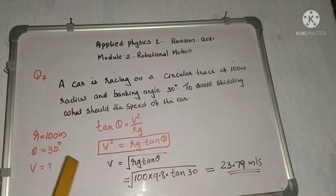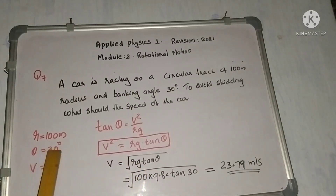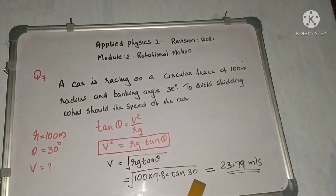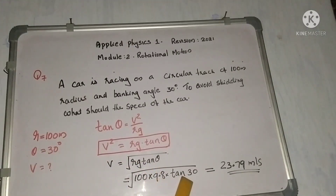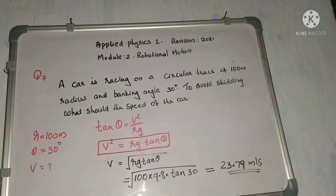Given r = 600 m, g = 9.8 m/s², and θ = 30 degrees. Substituting into the formula, the calculated speed is 23.79 m per second.